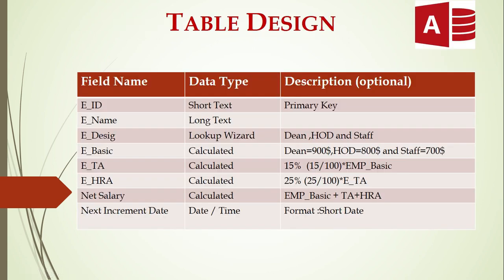First let me show the table design. These are the field names, data types, and descriptions. We are going to have a table called Employee. The fields are: Employee ID — short text and primary key — followed by Employee Name — long text — and Employee Designation, which will be a lookup with three options.